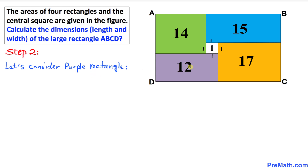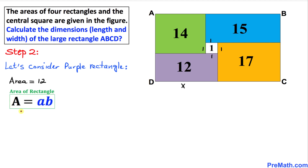Let's consider the purple rectangle. We assume that this horizontal side is X units, and we know the area of this rectangle is 12. The area formula is A = A × B. Let me call one side A and the other side B. So we have 12 = X times B.